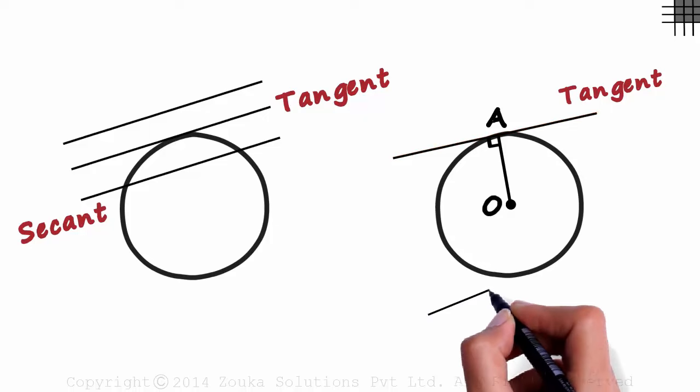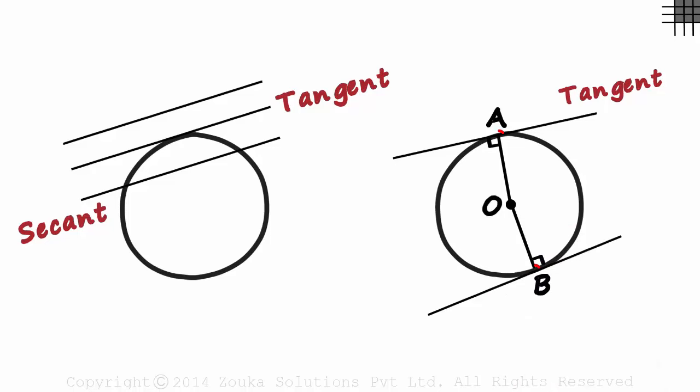No matter where the tangent is drawn, the radius to the point where it meets the circle will always be perpendicular to it.